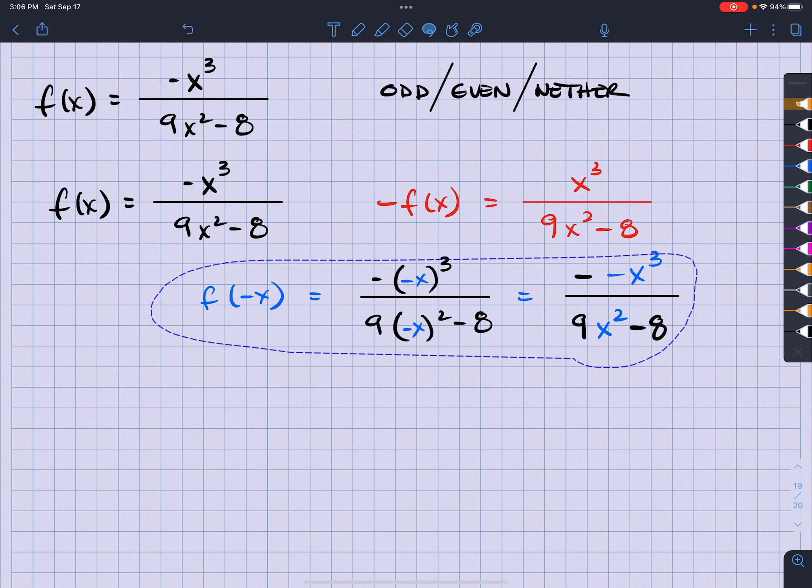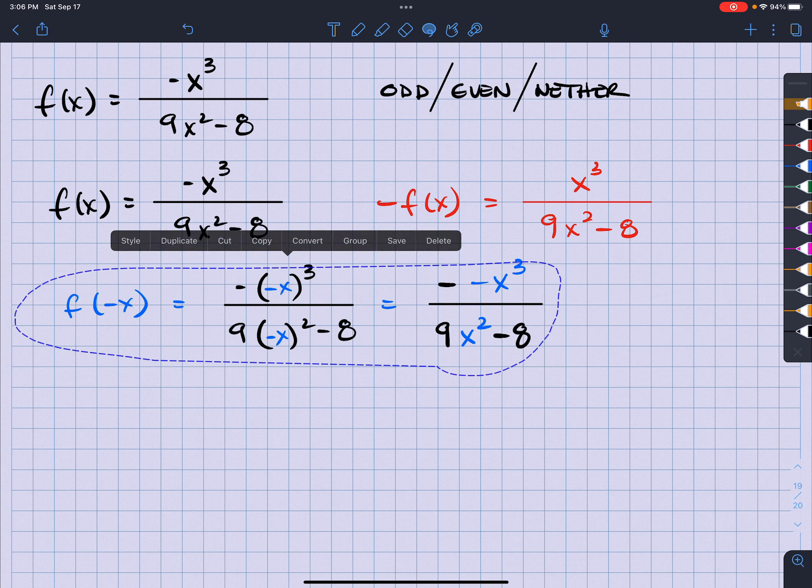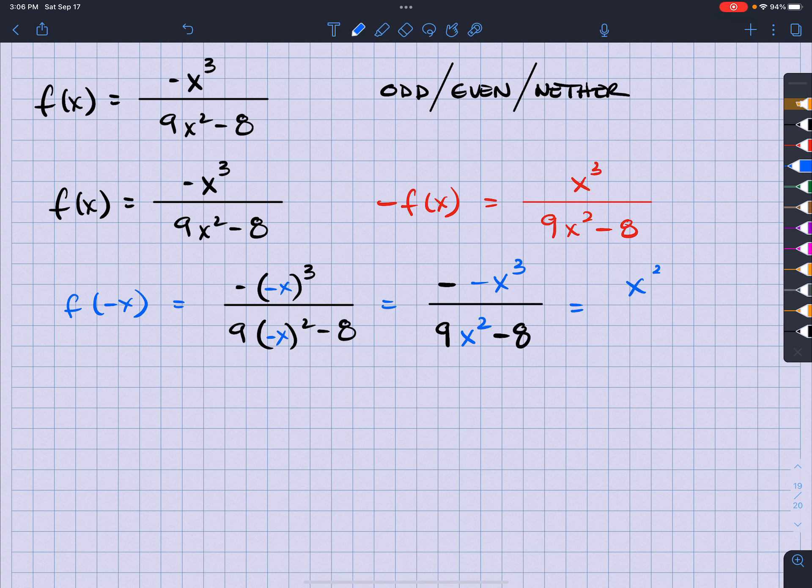Okay, so let's take a look at what that comes out to be. Well, doesn't that come out to be x to the third over 9x squared minus 8?